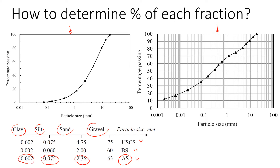Now let's look at the first example on the left hand side and determine the percentage of each fraction. We'll start with the gravel and sand boundary, which is 2.36 millimeters. Drawing a line there, everything on the right hand side is gravel and on the left hand side is sand.